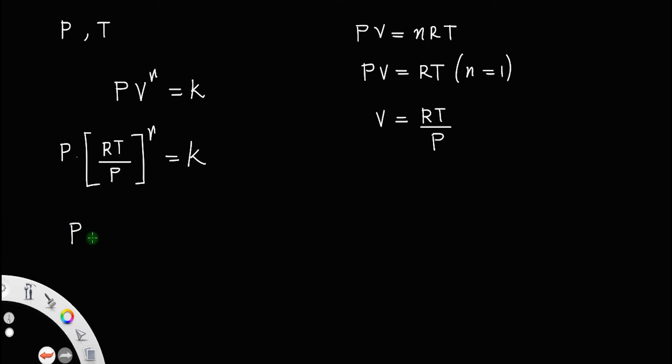So this is equal to P into R raised to gamma T raised to gamma divided by P raised to gamma. Provide the exponent power to all the terms inside the bracket equal to K.